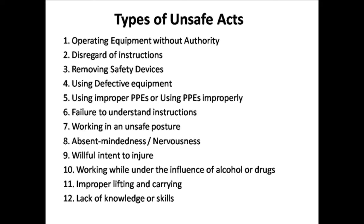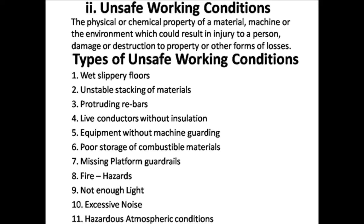There are 12 types of unsafe acts: operating equipment without authority; disregard of instructions; removing safety devices and then working; using defective equipment; using improper personal protective equipment or using PPE improperly; failure to understand instructions; working in an unsafe posture; absent-mindedness or nervousness; willful intent to injure others; working under the influence of alcohol and drugs; improper lifting and carrying; and lack of knowledge or skills.